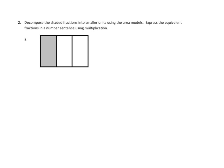Let's take a look at another problem. We can read our problem together. Let's see. Decompose the shaded fractions into smaller units using the area models. Express the equivalent fractions in a number sentence using multiplication. Oh, I'm going to underline that. We are using multiplication. Because remember, previously, we've been doing addition. So let's take a look at what we have modeled here. Let's see. We have our whole. It's divided into three parts. So I think we are working in thirds. And let's see. How many of these parts are shaded? Oh, it's just this one. So we've got one-third. All right, everybody agree we're looking at one-third?